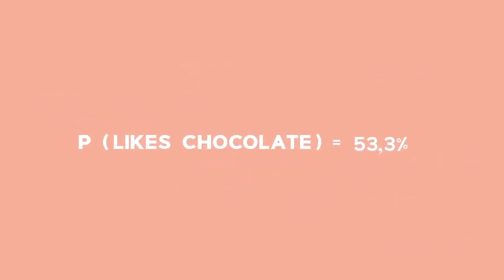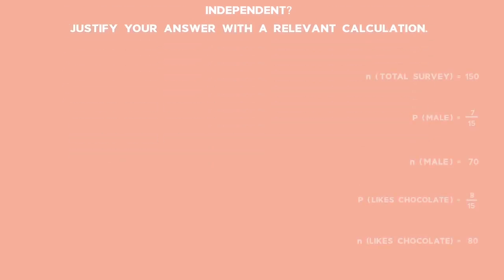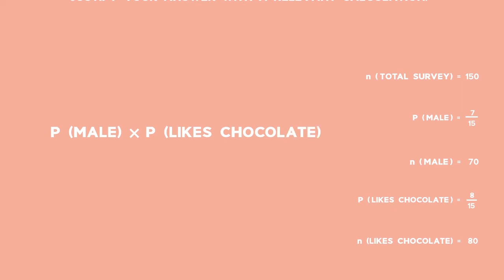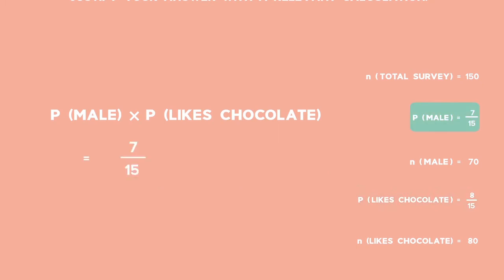This means that if we randomly select a person from the survey, 53.3% of the time this person likes chocolate. In part C, we are asked if the events being male and likes chocolate are independent, and to justify our answer with a relevant calculation. To do this, we first need to calculate P(male) × P(likes chocolate), then calculate P(male and likes chocolate). If both answers are equal, the events are independent. P(male) = 7 over 15 and P(likes chocolate) = 8 over 15, so P(male) × P(likes chocolate) = 7/15 × 8/15, which equals 56 over 225.